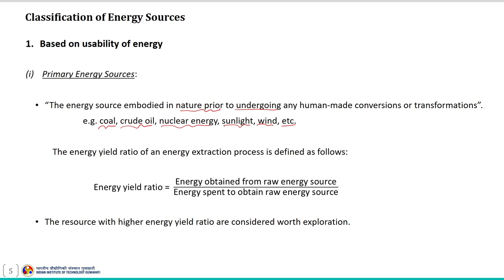Generally these resources cannot be utilized directly as such. These energy resources first need to be located, extracted, explored, processed, and then converted into a usable form required by the consumer. Therefore some amount of energy is spent in making these resources available in a usable form. For example, with coal and oil, the energy spent on recovering these resources is relatively less than what can be obtained by combusting them. Because of that, the energy yield ratio of these resources is significantly high.